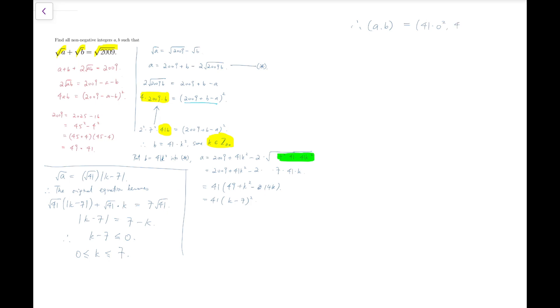So that means, for example, it can be 41 times 0² together with 41 times 7², or 41 times 1² and 41 times 6², and so on, all the way up to 41 times 7² and 41 times 0². So these eight ordered pairs are our solutions. And we can easily see that it would work because if we put this back into the equation, it would just become √41 times two integers added together, which must be 7, and so it would be equal to the right-hand side. So these eight pairs are our final answers.